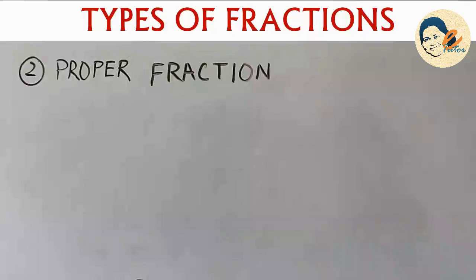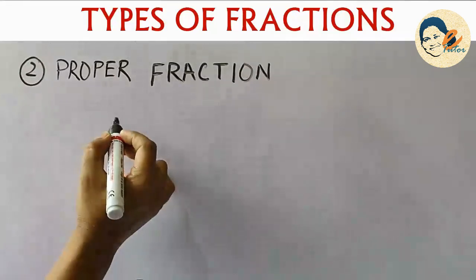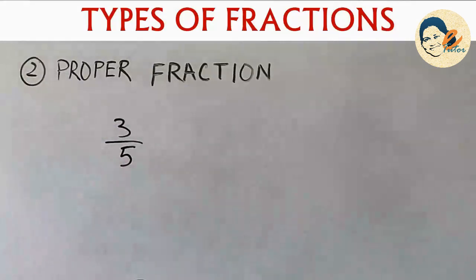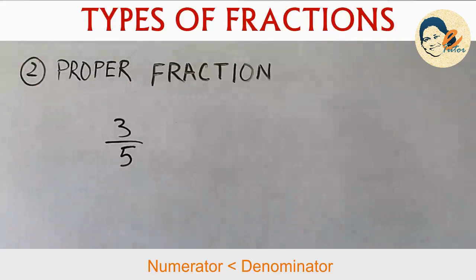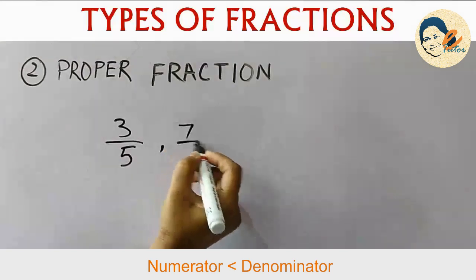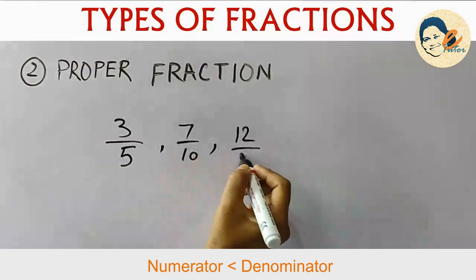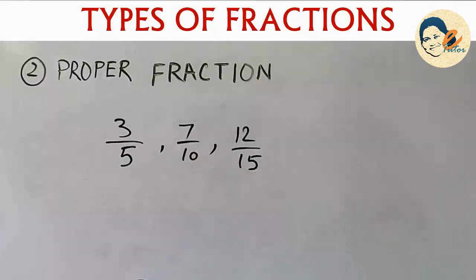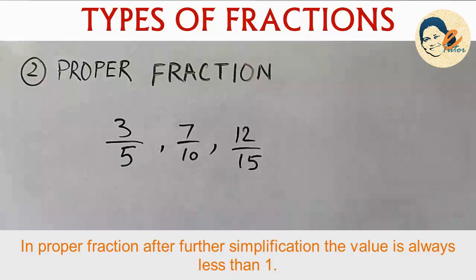The next type of fraction is proper fraction. What is a proper fraction? When the numerator is less than the denominator, it is called a proper fraction. For example, 3/5 — here the numerator 3 is smaller and the denominator 5 is larger. Likewise, 7/10 and 12/15 are also proper fractions. Remember, the value of a proper fraction after simplification is always less than 1.